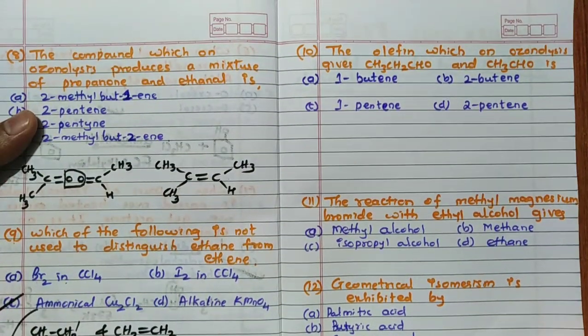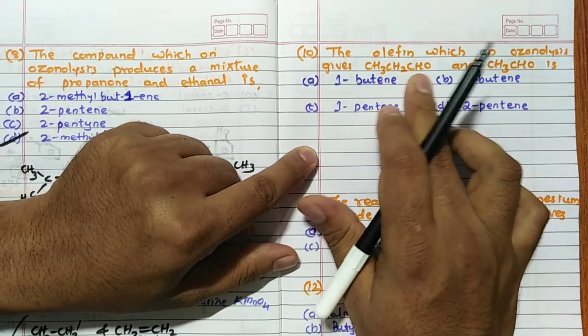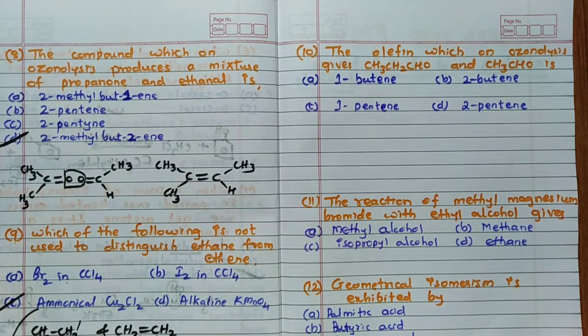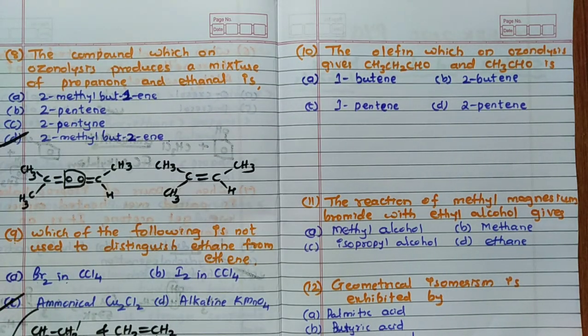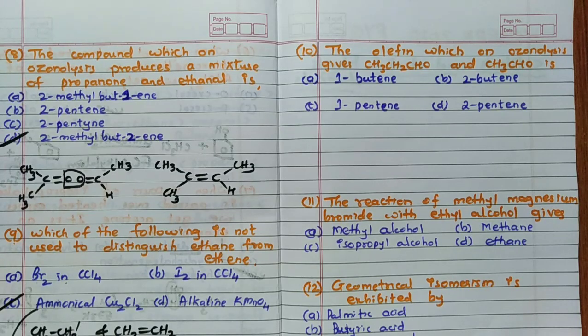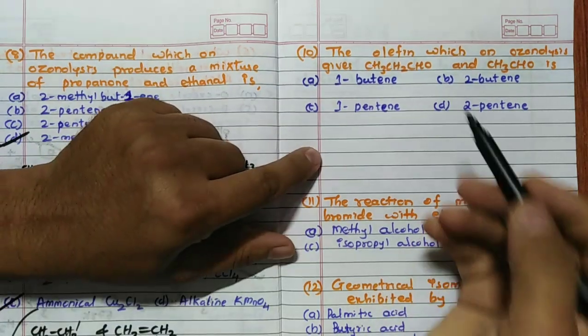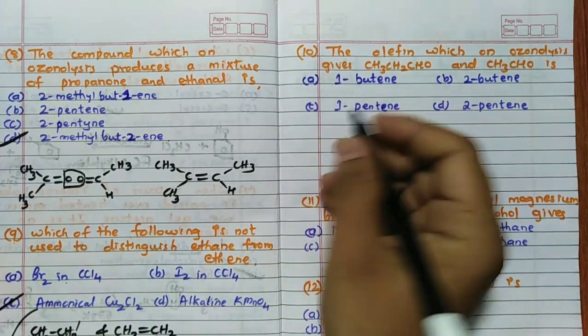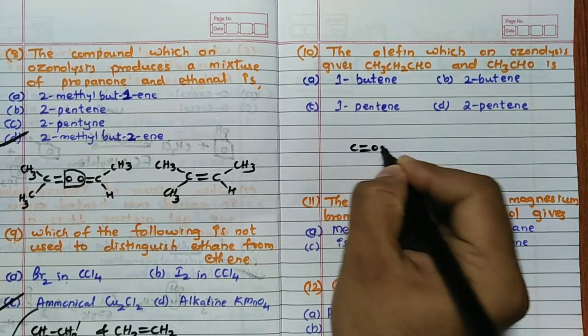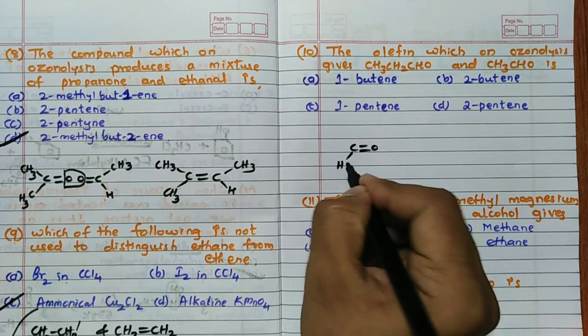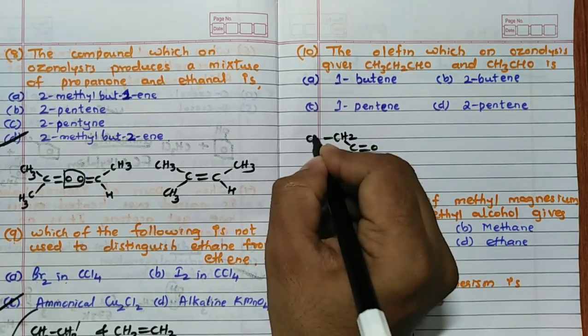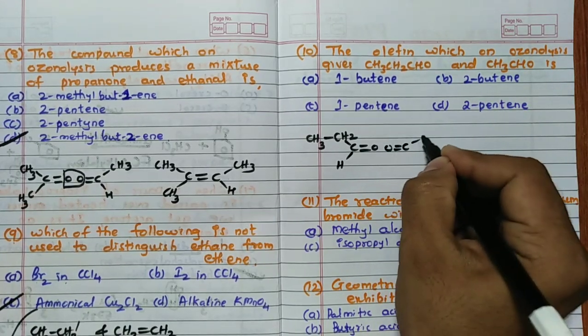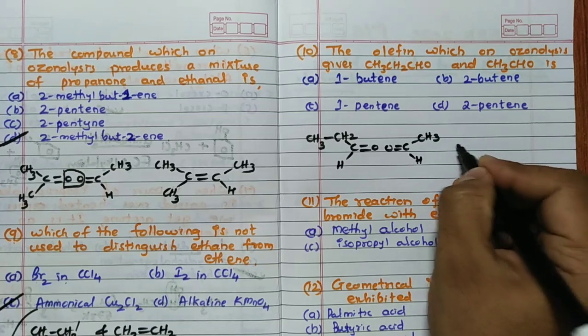Then olefin which is on ozonolysis gives CH3CH2CHO and CH3CHO is. Once again olefin means what? Double bonded compound. Remember that. Olefin is nothing but double bonded compound. So now see, first these two you write the product as it is like this. So CH3 I will write like this, C=O, H here, CH2 and CH3. And this one C=O, CH3, H here.